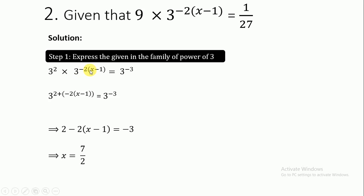The equation becomes 3^(2-2(x-1)) = 3^(-3). Remember that 3^(-3) can be written as 1/(3^3) = 1/27, which is one application of the laws of indices.